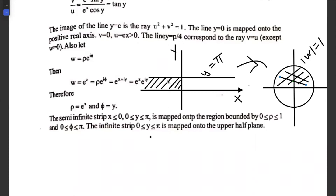Now we find the image of the semi-infinite strip defined by x ≤ 0 and 0 ≤ y ≤ π. In the z-plane, this is the region between the lines y = 0 and y = π, to the left of the imaginary axis (x ≤ 0). We find the image of this shaded region under the mapping w = e^z.